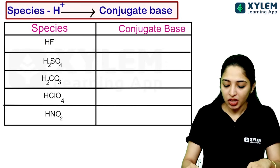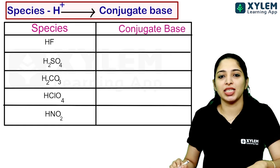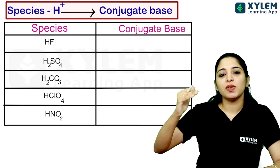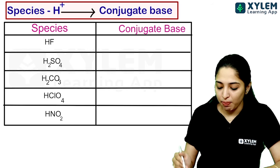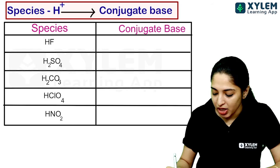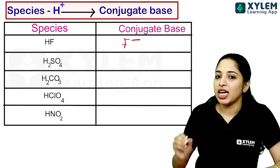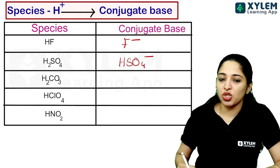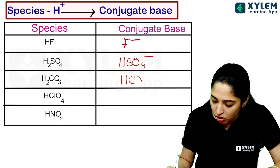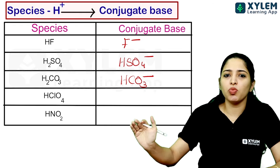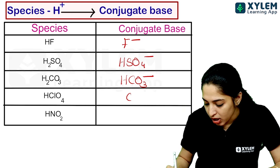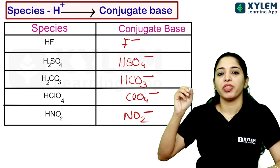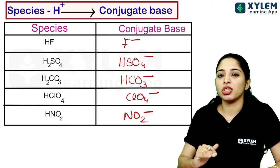Let's take a few examples. First, conjugate bases: HF minus H+ gives F minus. H2SO4 minus H+ gives HSO4 minus. H2CO3 minus H+ gives HCO3 minus. HNO2 minus H+ gives NO2 minus.